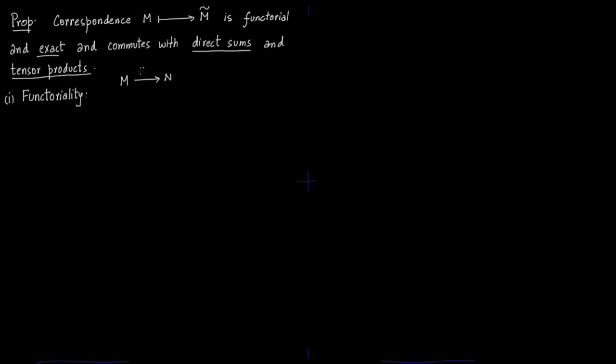So you have a map phi from M to N. This is a homomorphism of R modules where M is an R module and N is an R module, and then we have a map from MF to NF or M tilde to N tilde. Functoriality means that there is a map from M to N means there is a corresponding map from MF to NF. That's what functoriality means - a map in one category, there is a reflection in the other category.